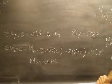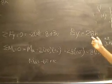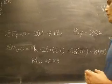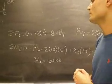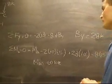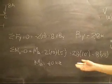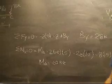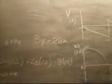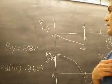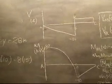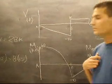Based on the loading, the reaction in the Y direction is 28 kips. We also use the sum of moments around support A to solve for the moment at A, giving us negative 60 kip-foot at A. Once we have solved for the supports and the moment we can draw our shear and moment diagram.